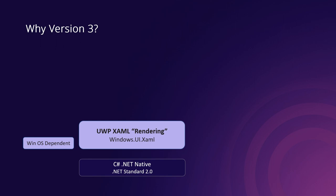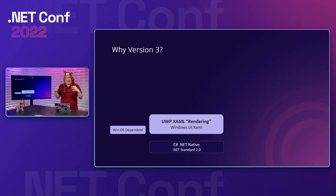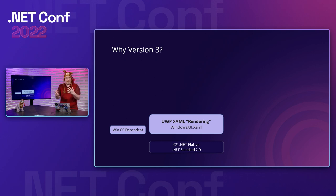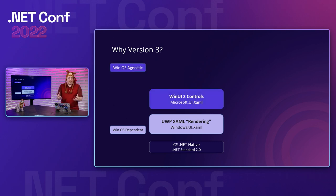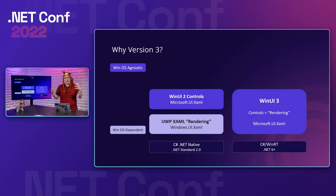Why is it WinUI 3? We can think of version 1 as the original operating system controls — you'd build your app and it would release on a specific Windows version. If there was a new control you wanted, you had to wait for users to upgrade before you could leverage it. WinUI 2 was a set of the latest controls agnostic to the OS, so you could include the package, use the latest control, and run it on any machine without waiting for users to upgrade.